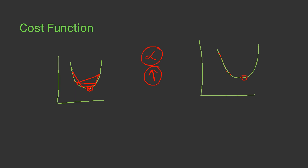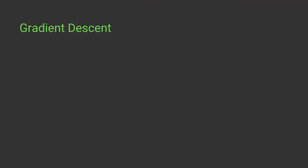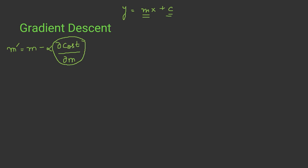Now let's understand how gradient descent and back propagation work. We have y equals to mx plus c and want the most optimal values of m and c. After calculating the cost, we update the parameters. The new m equals the old m minus alpha times del cost by del m. This is the backward propagation step, reducing cost with respect to m.